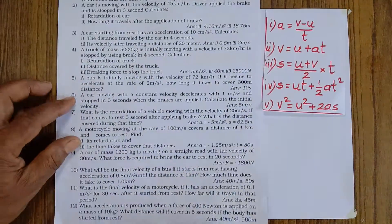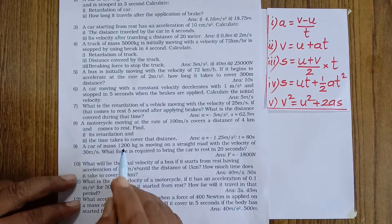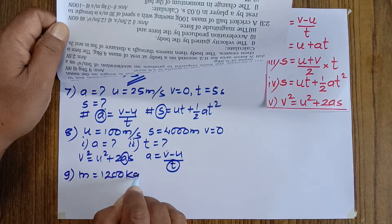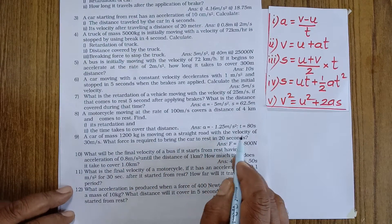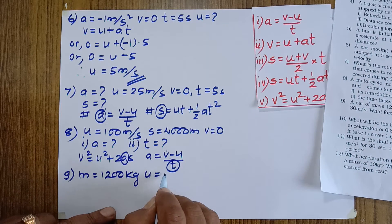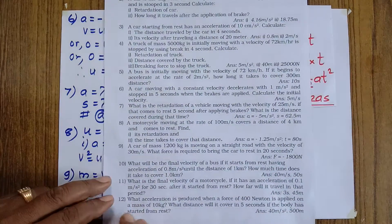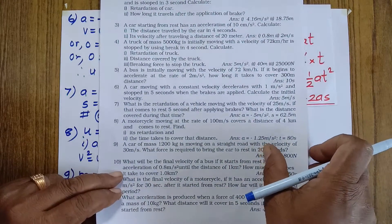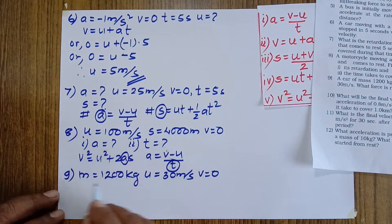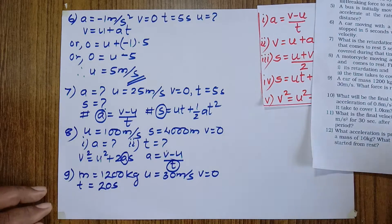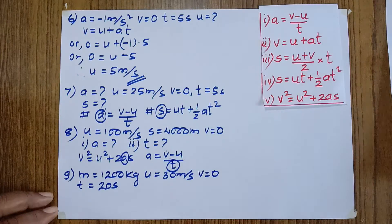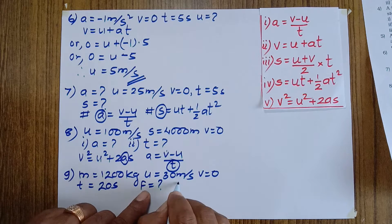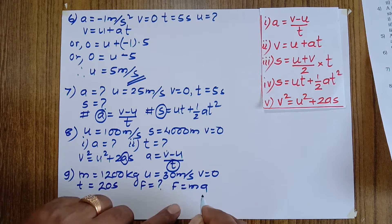Question number nine: a car of mass 1200 kilograms travels on a straight road with an initial velocity u equals 30 meters per second. What force is required to bring the car to rest in twenty seconds? Final velocity v equals zero and time t equals 20 seconds. Force f is the unknown.